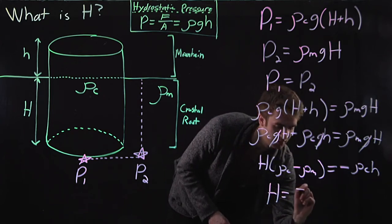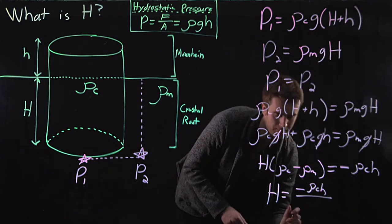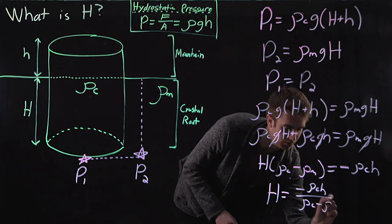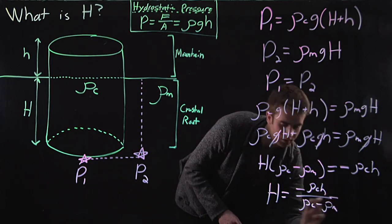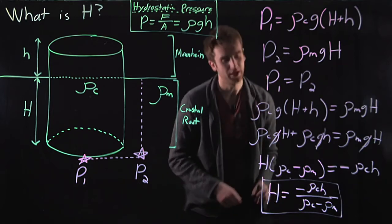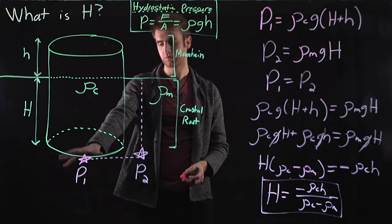H equals minus rho c little h over rho c minus rho m. So this is the equation that describes the depth under the surface at which the crustal root exists.